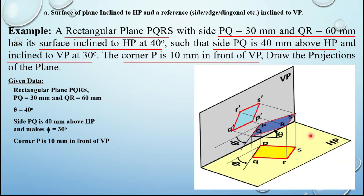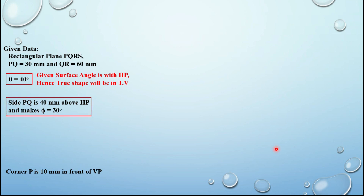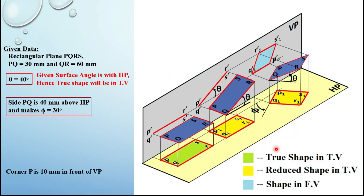This is a three-dimensional representation of the given question. As you can see, in the front view and top view we do not obtain the true shape, so you cannot draw the solution directly — that is why this question has three different stages. Step one of the procedure says to find the surface angle and neglect it. This surface angle is theta, so if you neglect theta, the true shape will be visible in the top view. Another angle is given with a reference: here the reference is side PQ, which makes 30 degrees with the vertical plane.